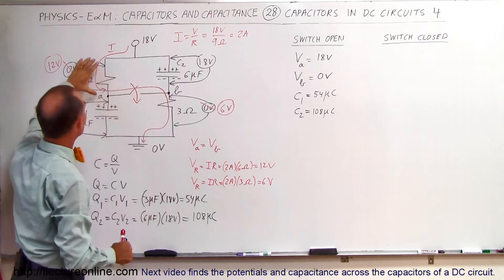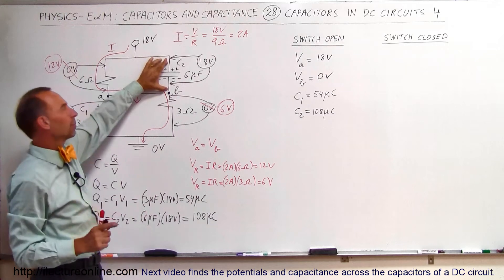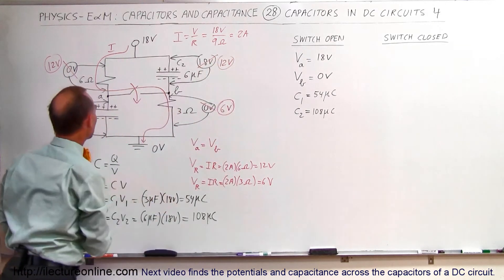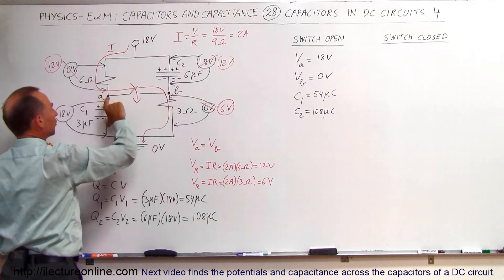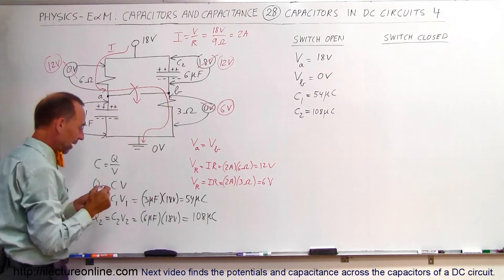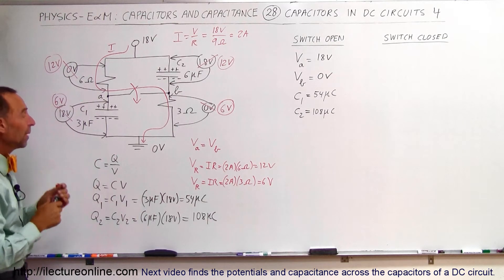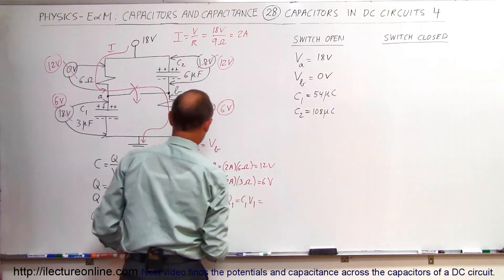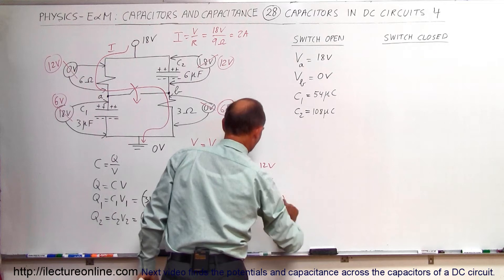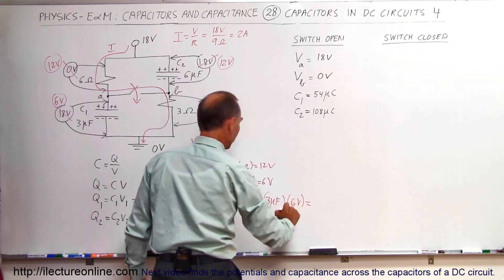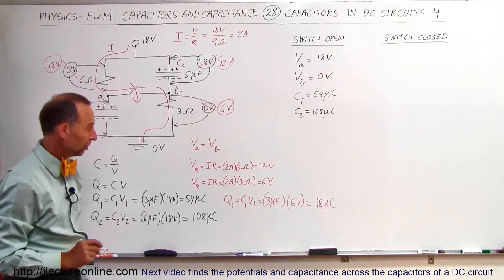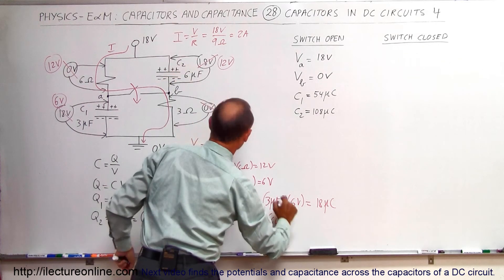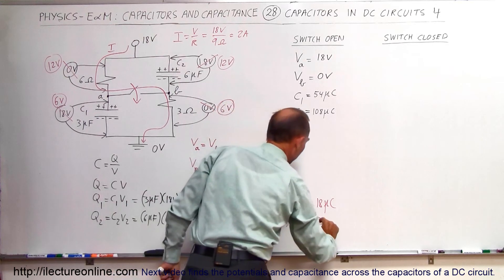Since A and B are at the same potential, the voltage drop across each capacitor branch must equal the voltage drop across the corresponding resistor branch. We have a 12-volt drop across the left branch, so C2 has a 12-volt drop — going from 18 volts down to 12 volts. And since we have a 6-volt drop on the right branch, C1 must have a 6-volt drop across it.